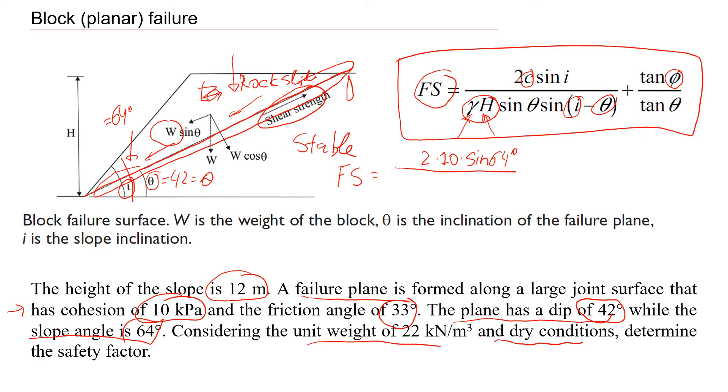Here, at the bottom, we're going to put unit weight, which is 22, times the height of the slope is 12, times the sine of theta, which is 42 degrees.